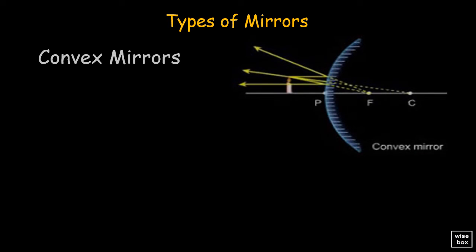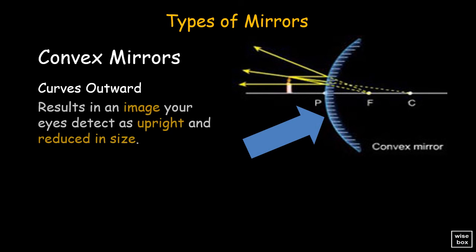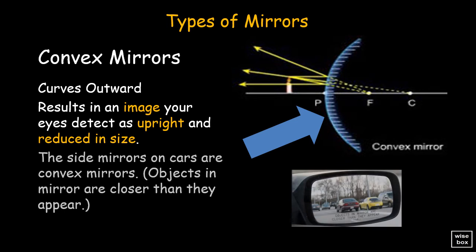Convex mirrors are curved outward. This results in an image your eyes detect as upright and reduced in size. The side mirrors on cars are convex mirrors. Objects in mirror are closer than they appear.